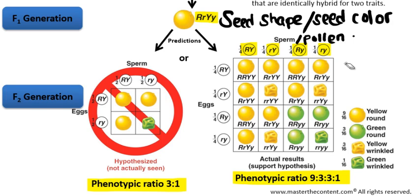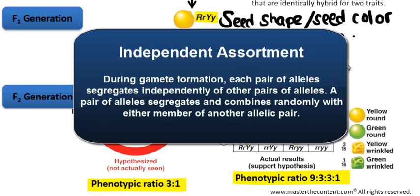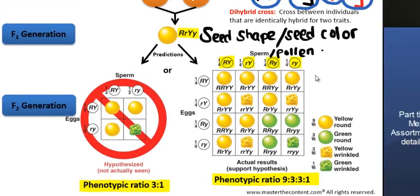The result of this entire experiment that Mendel performed is the basis of what we now call the law of independent assortment, which states that during gamete formation, each pair of alleles segregates independently of other pairs of alleles. Or put another way, during gamete formation, a pair of alleles segregates and combines randomly with either member of another pair. That, in a nutshell, is what the law of independent assortment is — it deals with the independent assortment of alleles of genes.